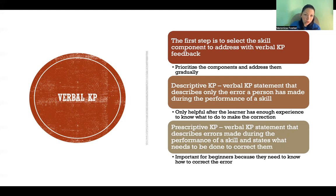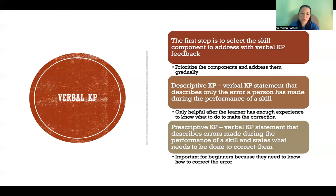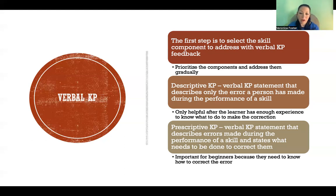You can just tell them, here's what we saw, and then they will already know how to fix it. That doesn't work for beginners because they don't have enough experience to know what to do to make the correction. So they require prescriptive KP — they need to know what they did wrong and they need the information about how they can fix it. And then with experience, they'll know in the future how to fix it, and then descriptive KP will be sufficient.